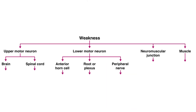When a patient presents with a problem such as weakness, for example, students are often overwhelmed. It's helpful to organize the differential into anatomic subcategories, including upper motor neuron, lower motor neuron, neuromuscular junction, and muscle. Now it becomes easier to recall the long list of causes of weakness.